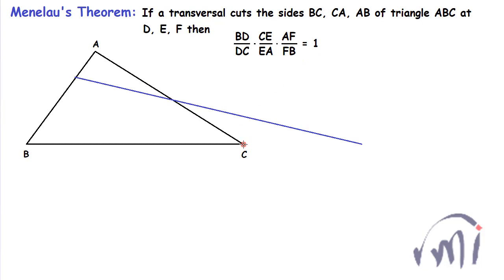and it also cuts side BC externally when I extend it till point D. So this transversal is intersecting the side BC at point D, CA at point E, and AB at point F, and we have to prove this relation.